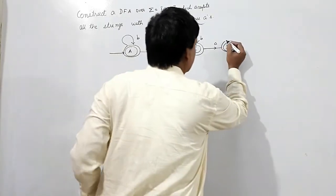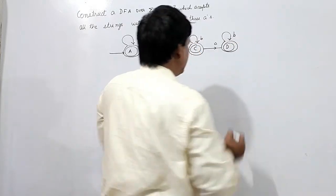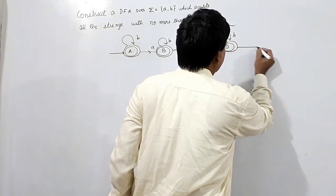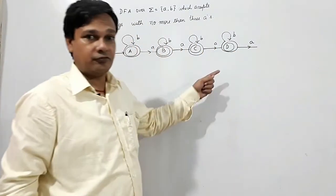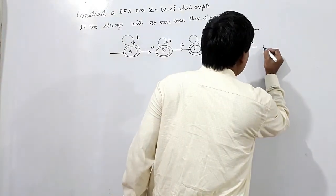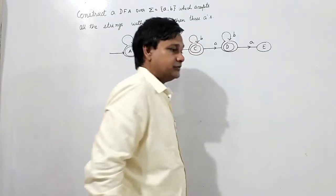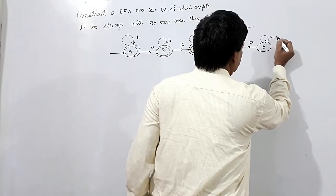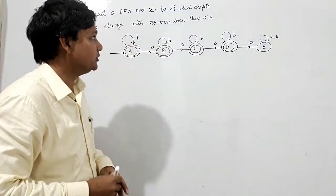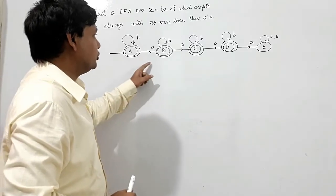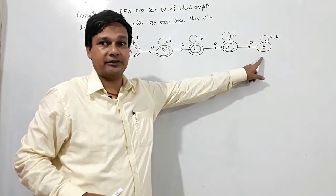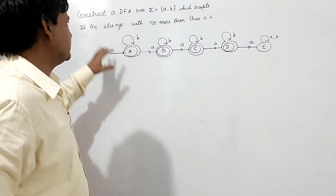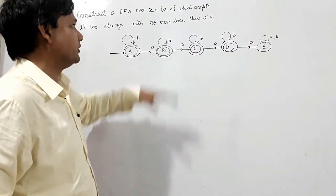State with three A's should be accepted. If I get one more A, there are four A's, so it should be rejected in state E. Now whether A comes or B comes, it will be rejected — it will remain in the same state and never reach the final state. Whenever there are more than three A's it will always be rejected. So this is the DFA for strings with no more than three A's.